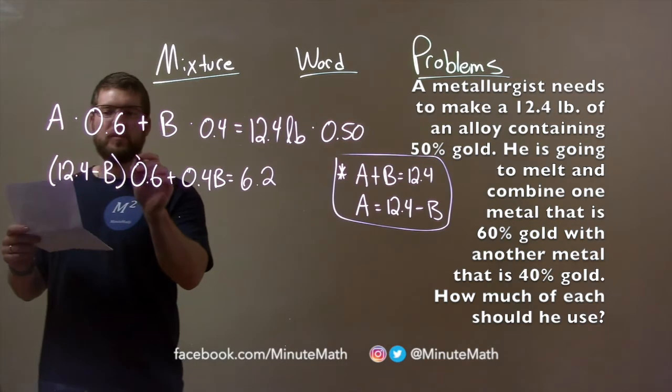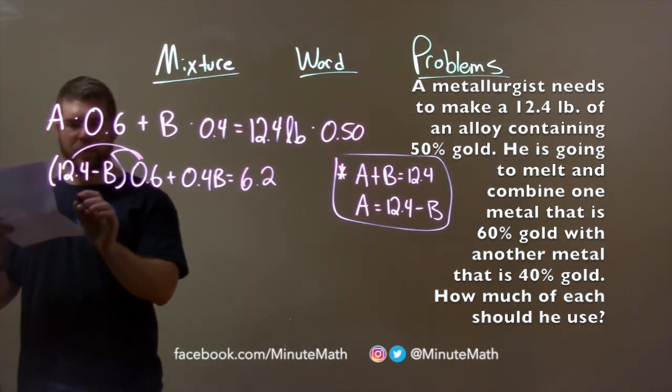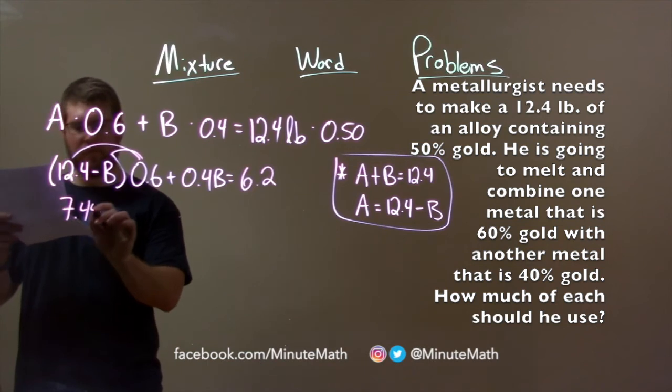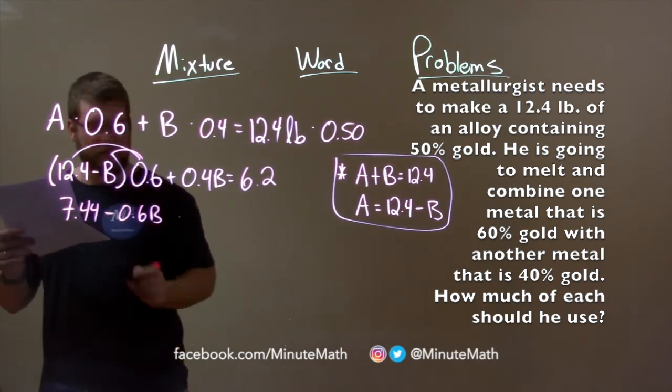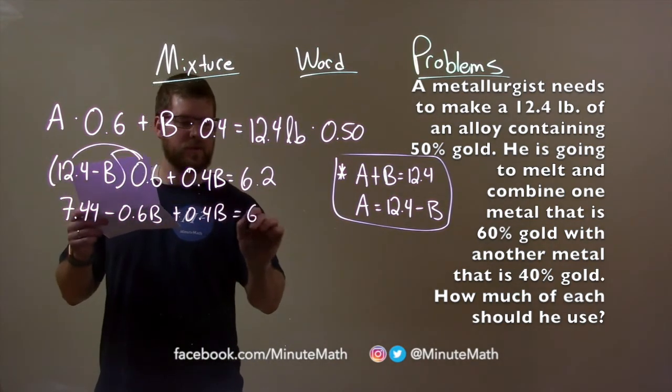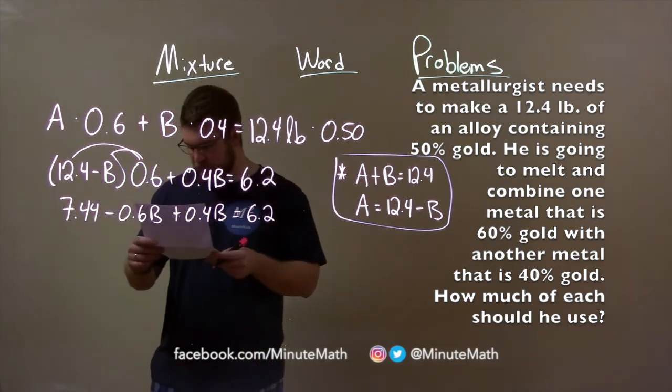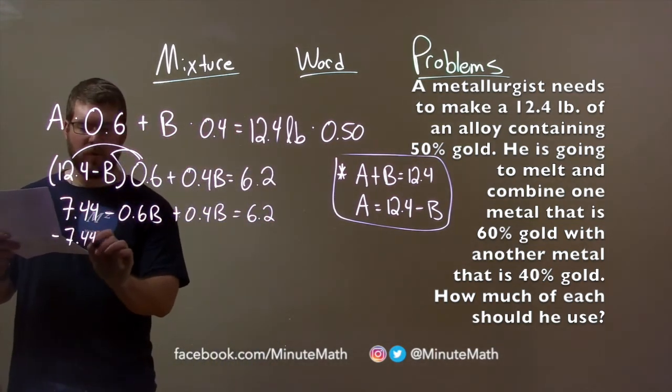So, we're going to distribute the 0.6 to both parts here. 0.6 times 12.4 is 7.44 minus 0.6B, 0.6 times B, plus 0.4B equals 6.2.